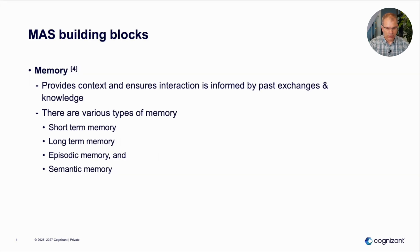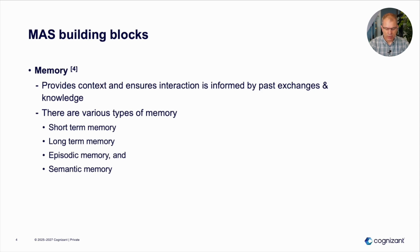Another building block of multi-agent systems is memory. It provides context and ensures that interactions are informed by past exchanges and knowledge. There are various types of memory: short-term memory, long-term memory, episodic memory, and semantic memory that represents facts.